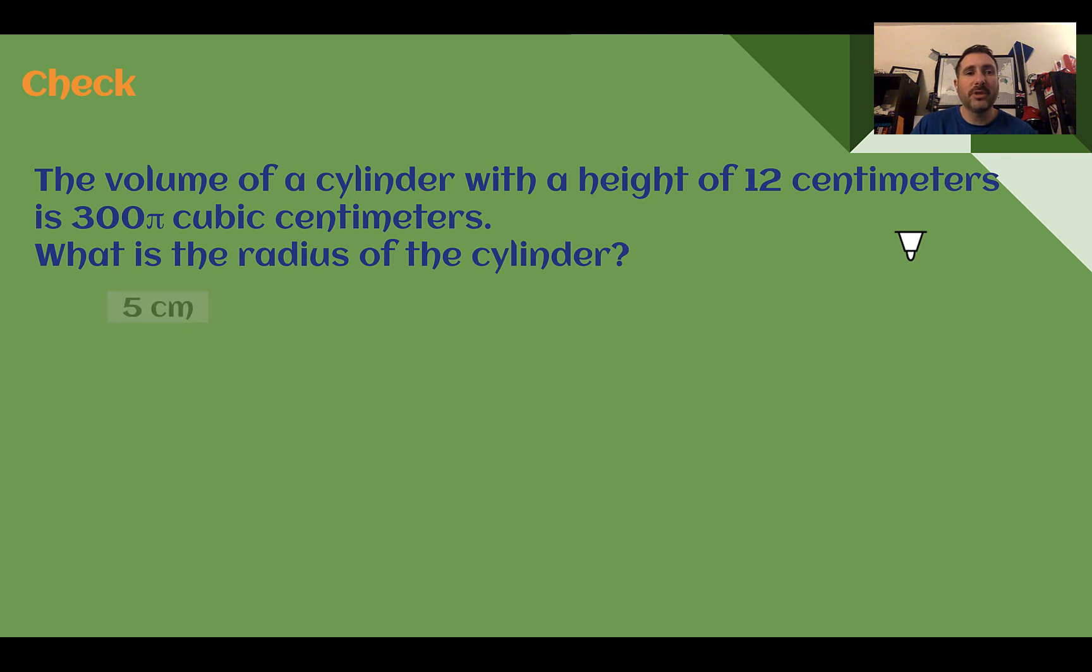Check your answer. You should have said the radius is 5. So let's figure this out. Volume equals pi times the radius squared times the height. We're given the volume is 300π.